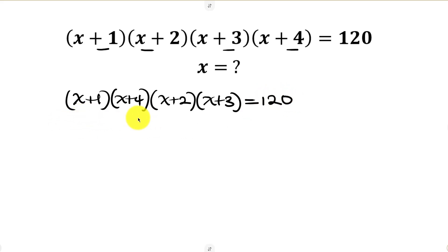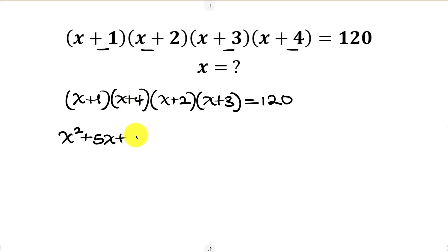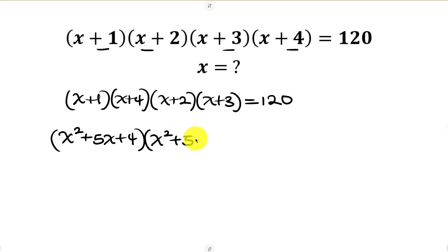Now let's expand each term. Starting with the first two: x times x is x squared. To get the coefficient of x, 1 plus 4 is 5, so this will be plus 5x, and then 1 times 4 is 4. For the other one, x times x is x squared. 2 plus 3 is 5, so this will be plus 5x, and then 2 times 3 is 6, so plus 6. This is equal to 120.